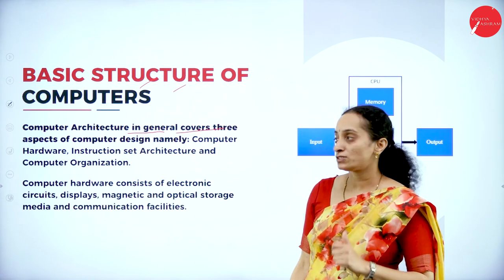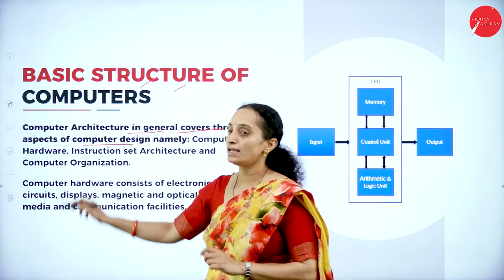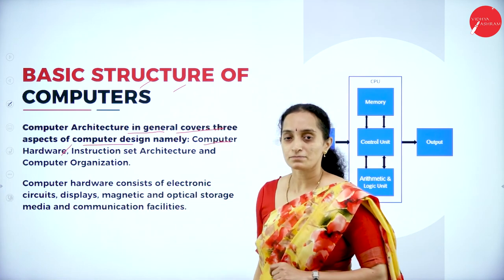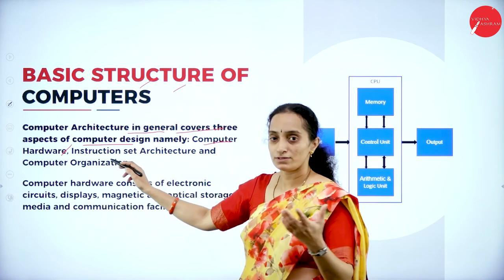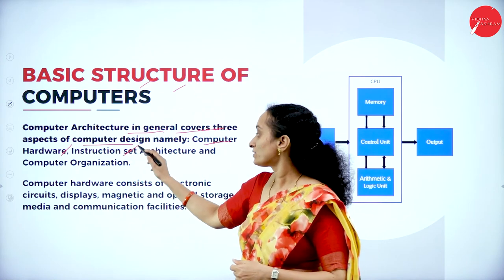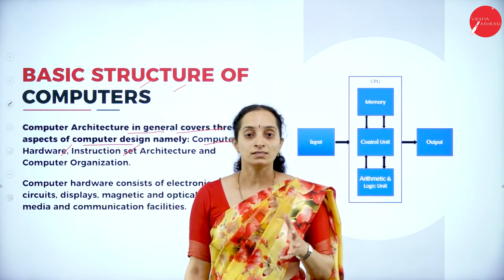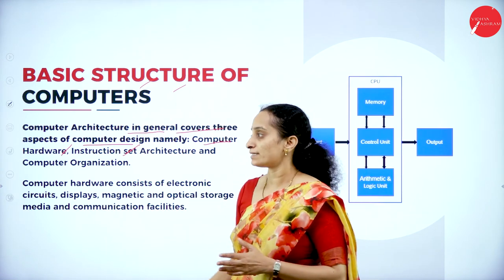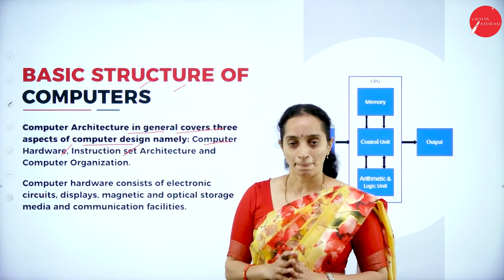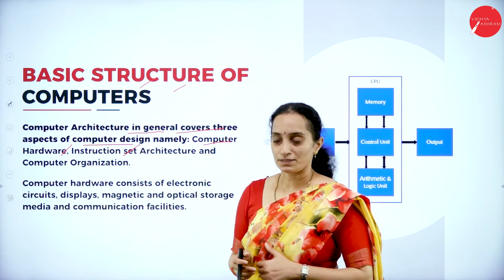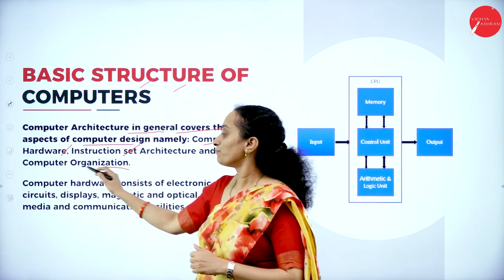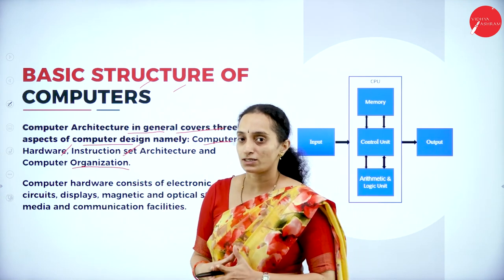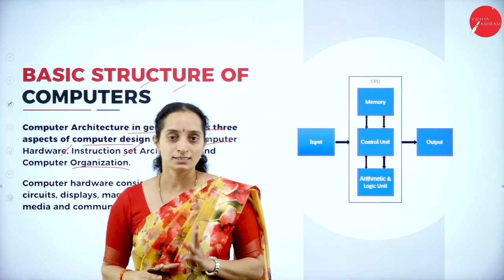The computer architecture in general covers three aspects of computer design. They are: computer hardware, which you are going to view; instruction set architecture, because computers cannot think by themselves — they need to be instructed by somebody; and computer organization, how they are organized and how they are working. So computer architecture deals with these three things.